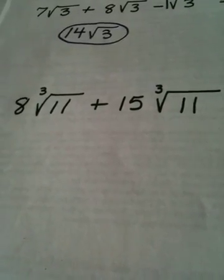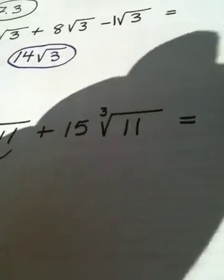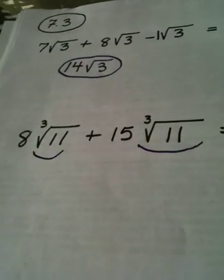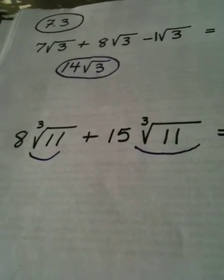Okay, this next problem. I have 8 times the cube root of 11 plus 15 times the cube root of 11. This term and this term are identical. The cube root of 11 is the same as the cube root of 11, so we can add them.